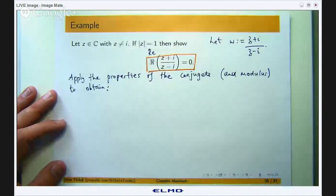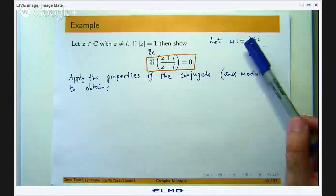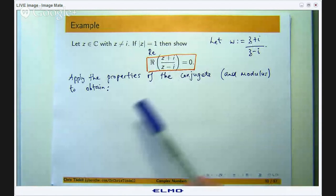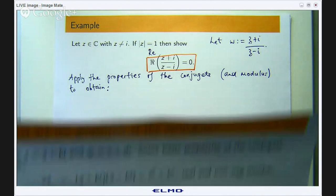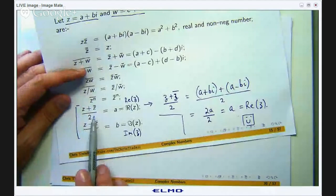Okay so let us get back to the problem. I have just put in a couple of early steps here. I am going to let w be this quotient here just to simplify things and we are going to apply the properties of the conjugate and the modulus. In particular we are going to start with this thing here but with z and z bar replaced with w.